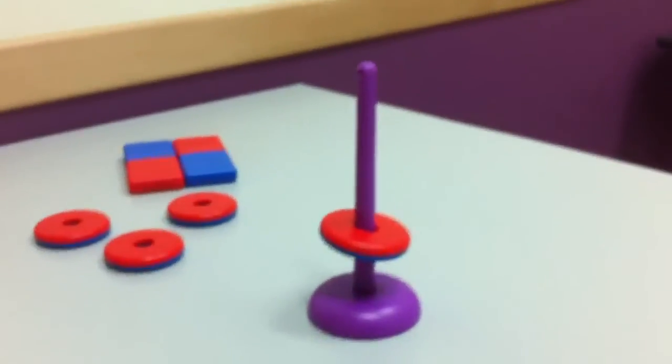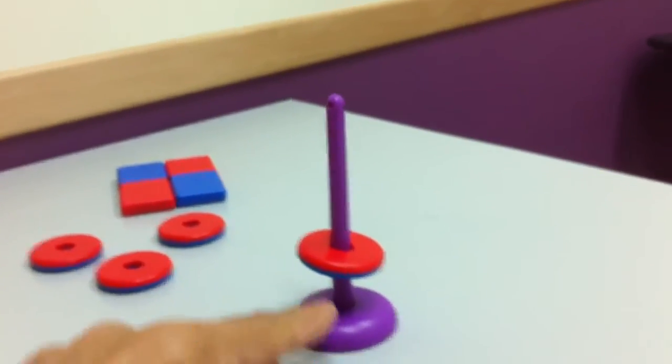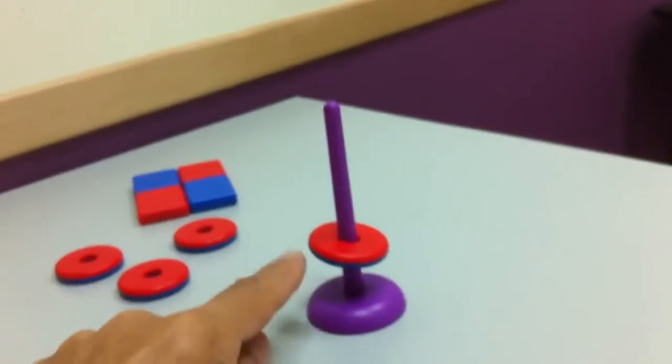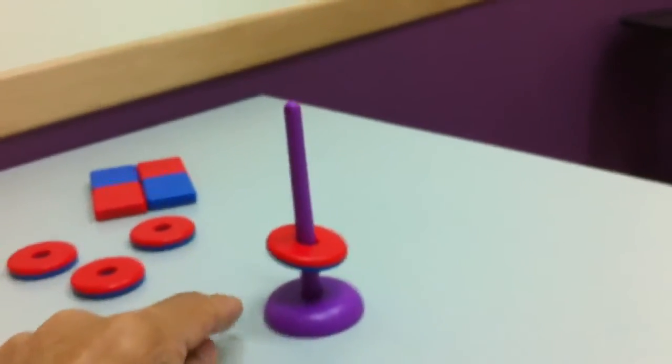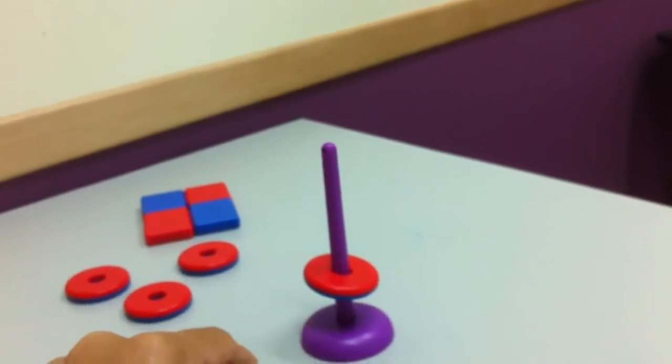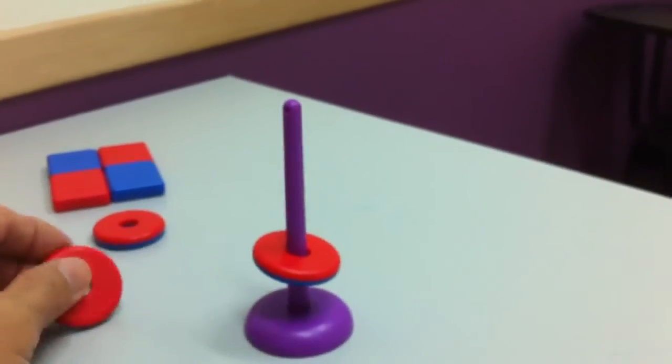So, here a ring magnet is floating above the base of the pole because the two like poles of the magnetic are facing each other causing them to repel.